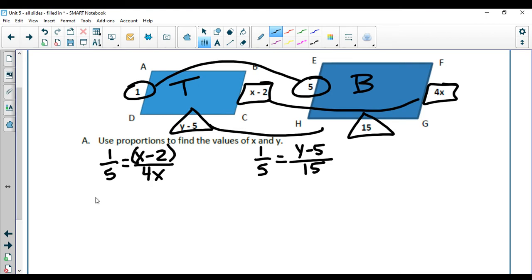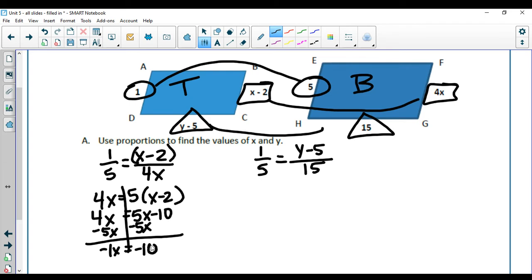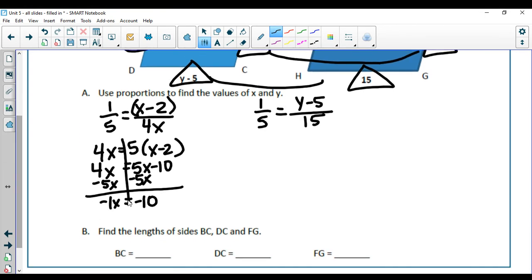I'm going to put that in parentheses. 1 times 4x is 4x equals 5 times parentheses x minus 2. Because this has the x, I do have to distribute, so 5x minus 10 equals 4x. Normally we'd move the 4x, but it's already all by itself, so I'm going to move the 5x. You get negative 1x equals negative 10. To get the x by itself, I divide through by negative 1, and that gives me x equals 10.